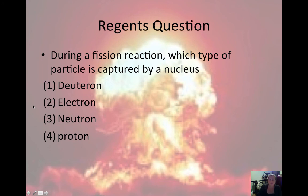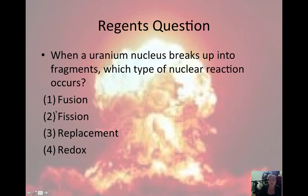During fission, which type of particle is captured by a nucleus? In fission, a neutron is captured. When a uranium nucleus breaks up into fragments, which type of nuclear reaction occurs? If something is breaking apart, this would be fission; coming together is fusion. So uranium breaking into fragments would be fission.